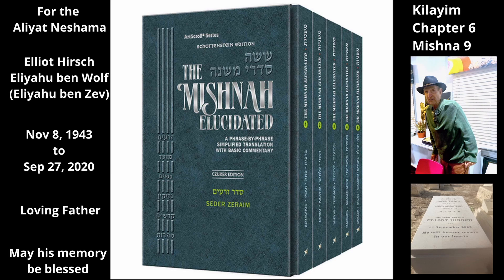Chapter 6, Mishnah 9. It is prohibited to plant other species beneath the grapevine. See Mishnah chapter 7, Mishnah 4. The Mishnah applies this law to planting under the new growth of a vine. We now turn to the words of the Mishnah.